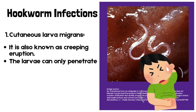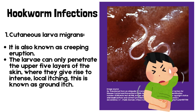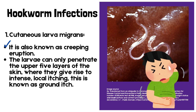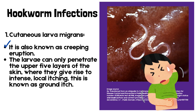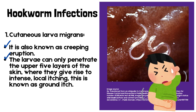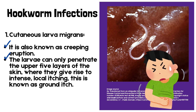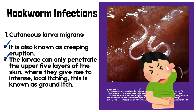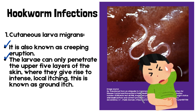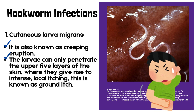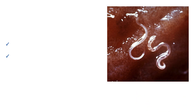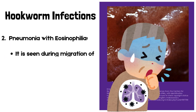Common hookworm infections. Number 1: Cutaneous larva migrans, also known as creeping eruption. The larvae can only penetrate the upper five layers of the skin, where they give rise to intense local itching. This is known as ground itch.